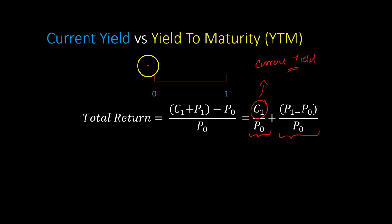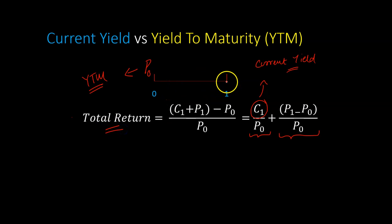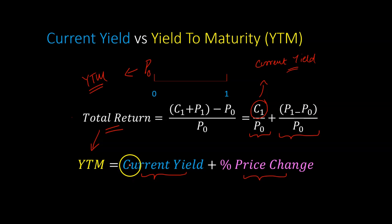Now, if you buy the bond today at a certain price P0 — which is consistent with a certain yield to maturity — and, this is the important part, if that yield to maturity does not change over time, then it turns out that you can think of the total return from holding on to this bond for one year as its yield to maturity. The way you are going to make that yield has two components: one is its current yield, which is how much you're going to make in the form of coupon payments, and the other is the percentage change in price. I realize this is rather conceptual at this stage, but we're going to show this using an example.